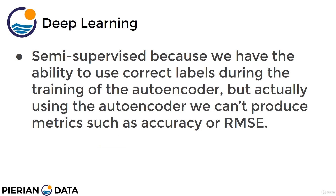The reason people use the semi-supervised term is because while we're actually training the autoencoder, we do take advantage of having sometimes historical labels. However, when we're actually using the autoencoder, we don't really have a situation where we can produce a nice classification report or a root mean squared error. That will make a lot more sense when we see our use cases of dimensionality reduction or noise removal.